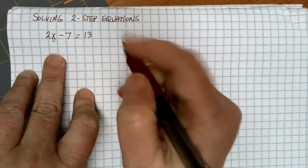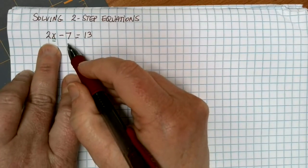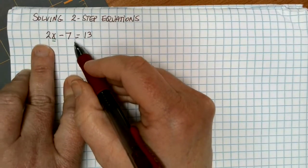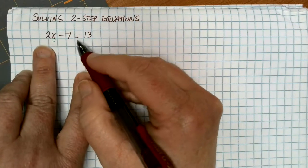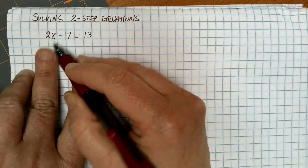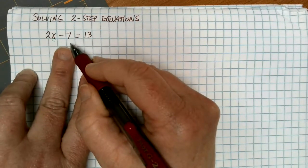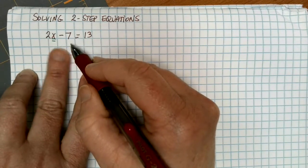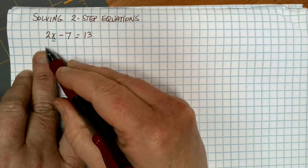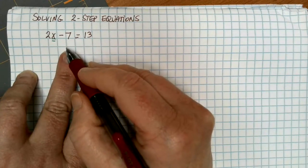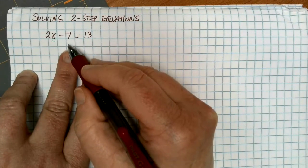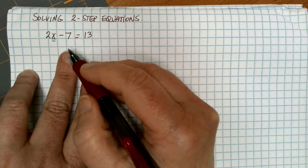If I'm looking at a problem like this, I want to get the x by itself. And it's right there. So if I want to get the x alone, I need to get rid of anything that's on the same side of the equation as the x. There's a 2 that I'm going to need to get rid of, and there's also a minus 7 that I'm going to need to get rid of. Notice that one of the operations is multiplication and the other is subtraction. Does it matter which number I get rid of first? The answer is absolutely.